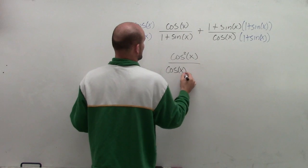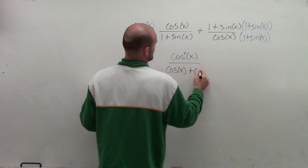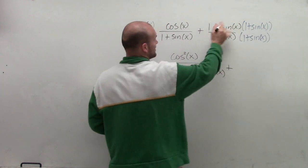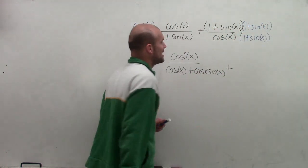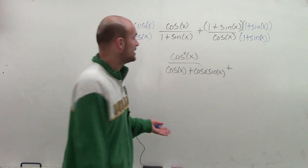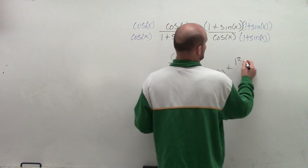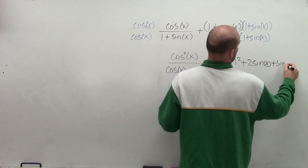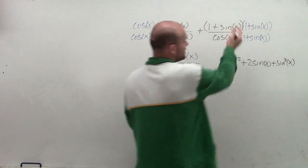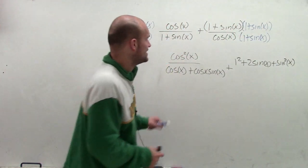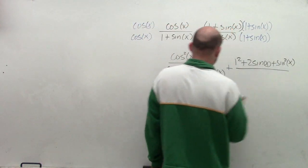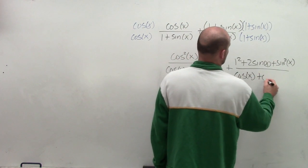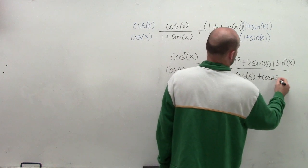I'm going to have cosine of x plus cosine of x sine of x plus. Now here, I'm going to have a binomial times the same binomial, which would be a perfect square. Therefore, I'm going to have 1 squared plus 2 sine of x plus sine squared of x. Now if you want to do FOIL to check your answer, that's perfectly fine as well. And then I notice my denominator is going to be exactly the same. As I distribute through, I have cosine of x plus cosine of x sine of x.